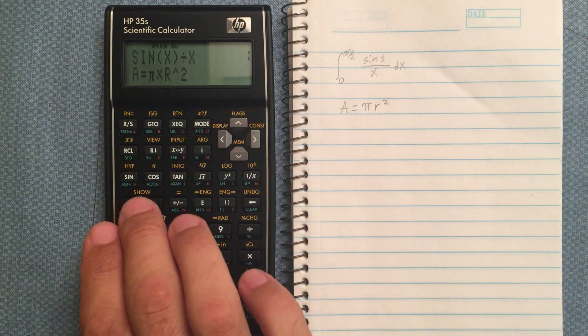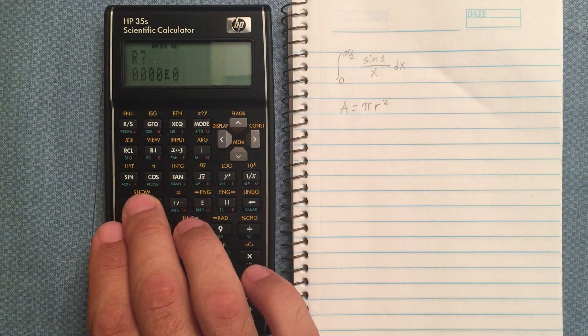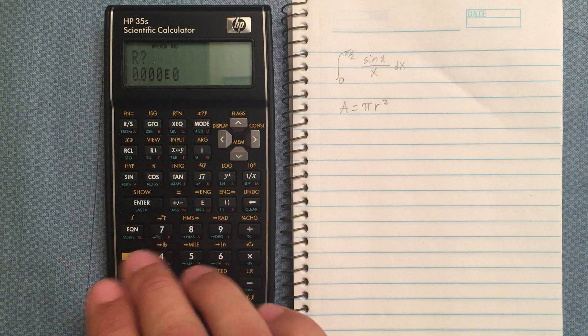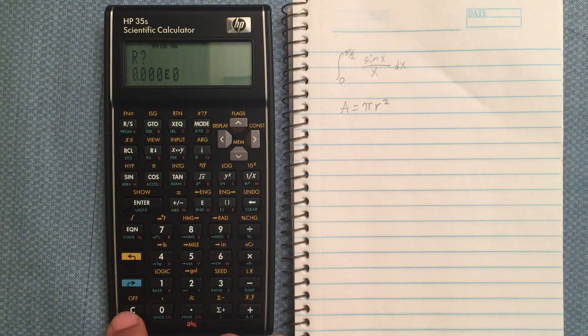Alright, so now we have A equals pi times R squared. Now if I hit enter, it asks me to input the variable that will then give me the answer for A.